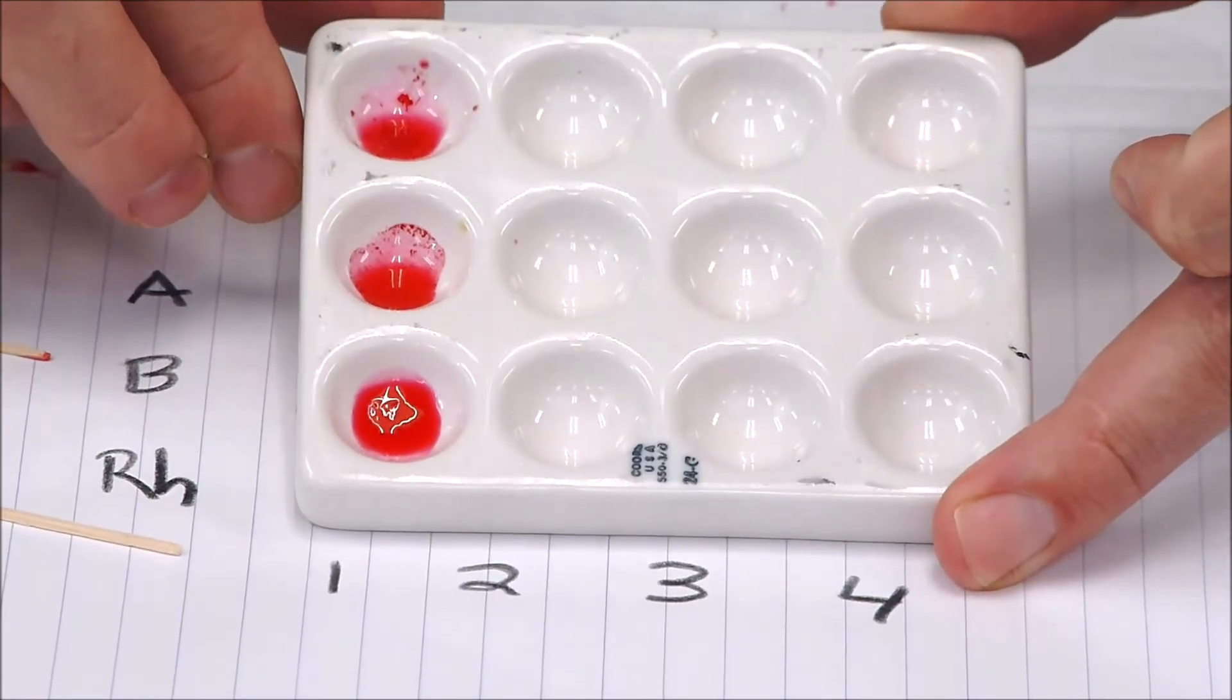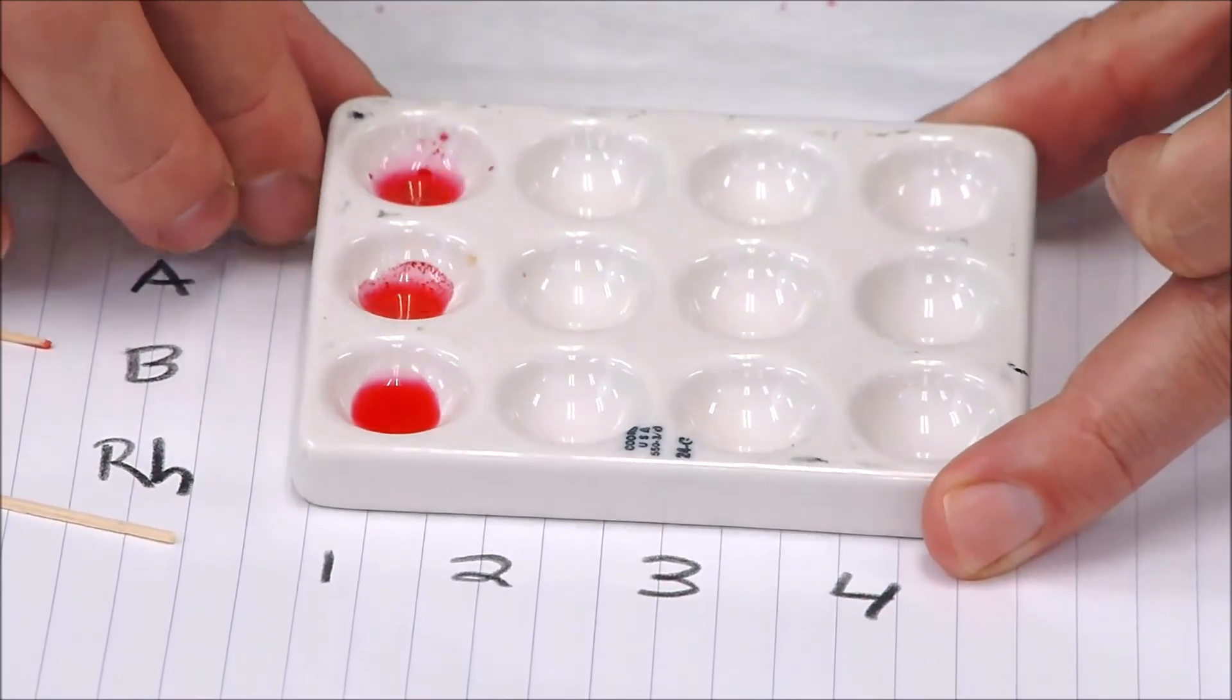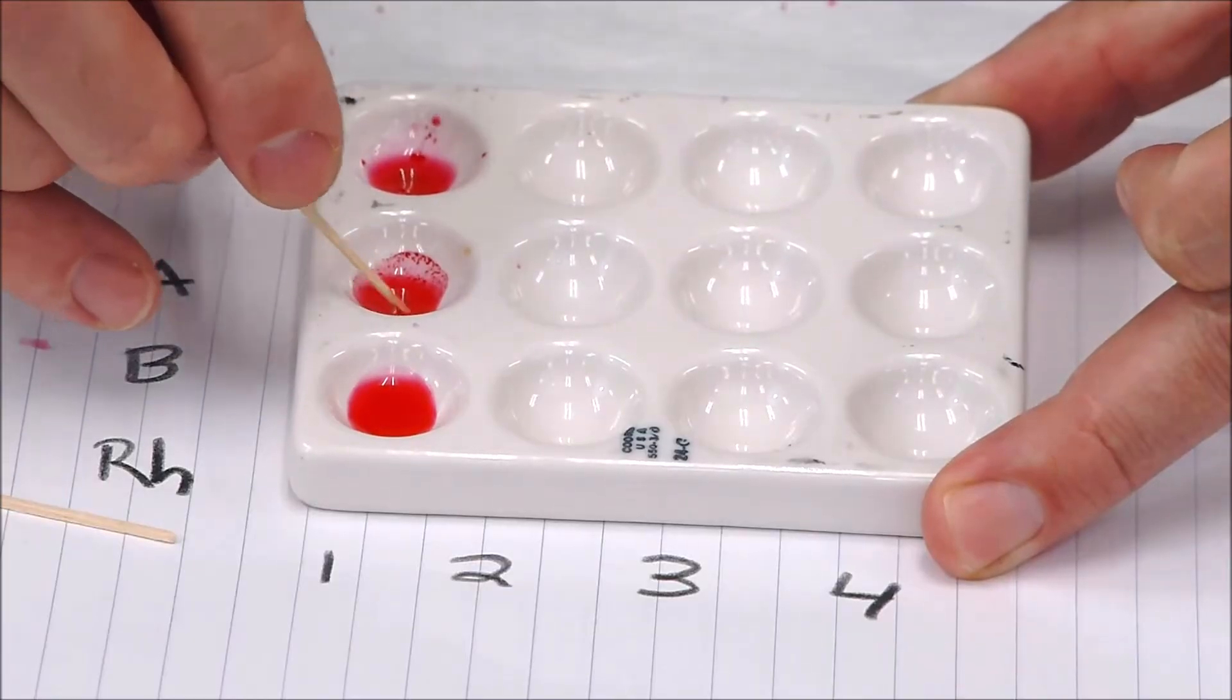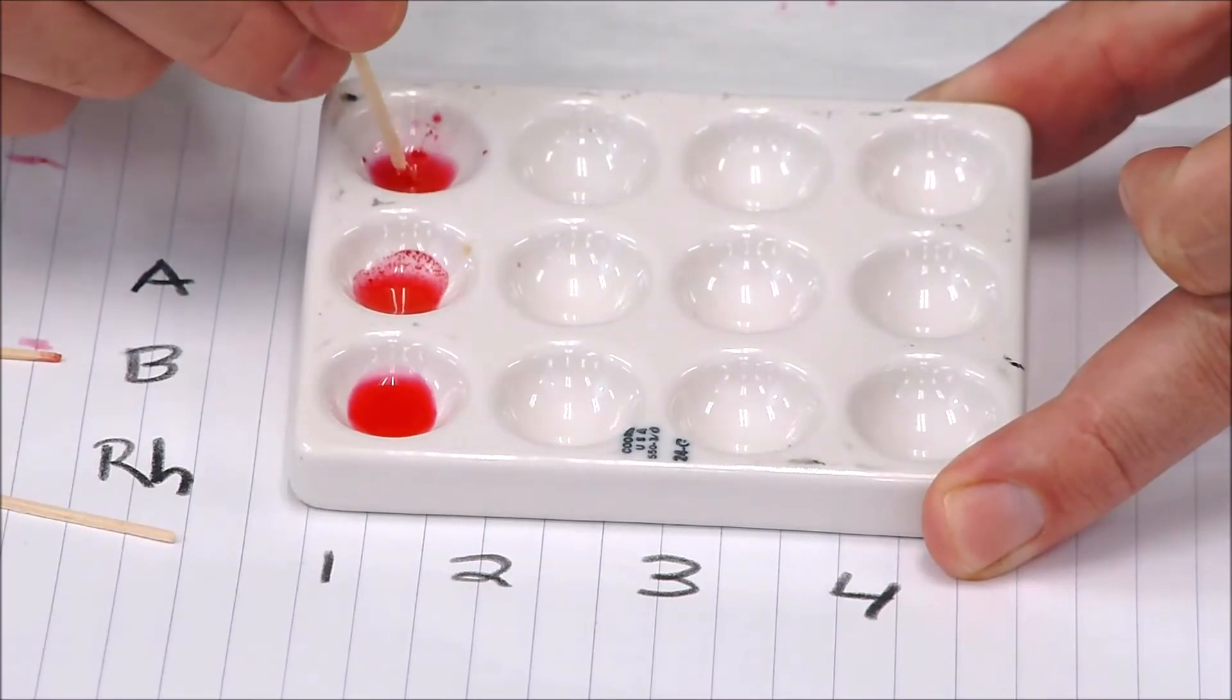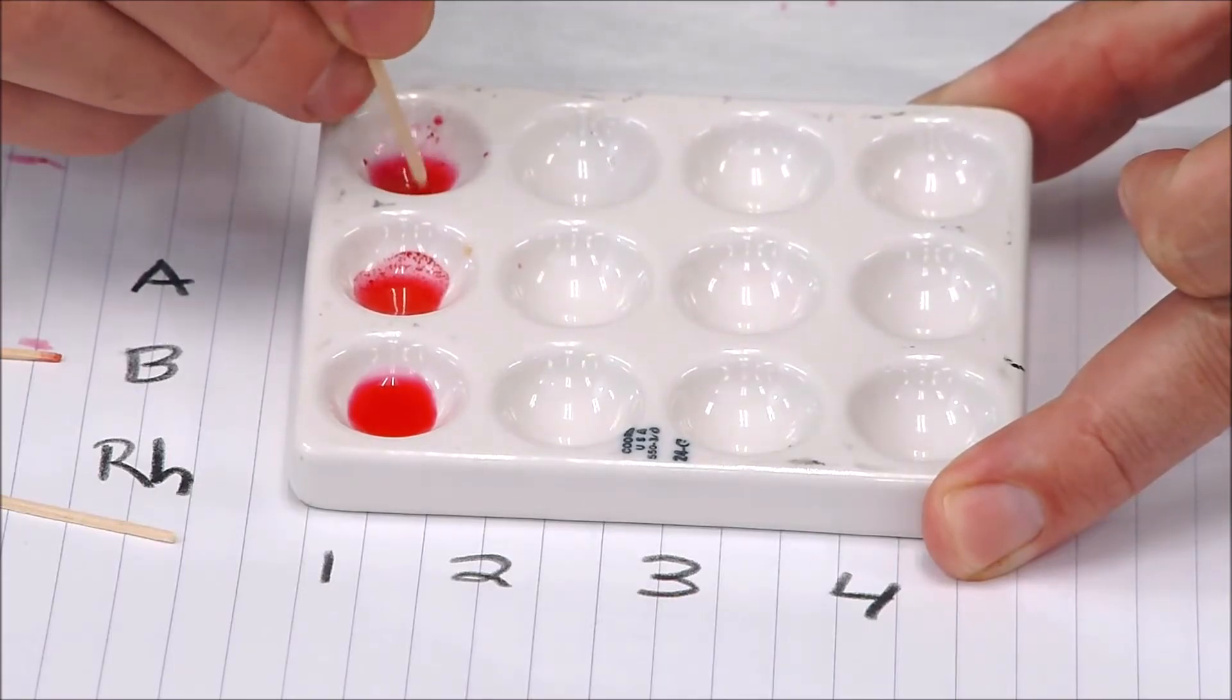Okay, now let's take a look at our samples. What we can see here is it looks like I definitely have clumping or agglutination down here in the B well. So in that case, we know that I have the B antigen in that blood, because if the antigen and the antibody meet, then it causes agglutination.